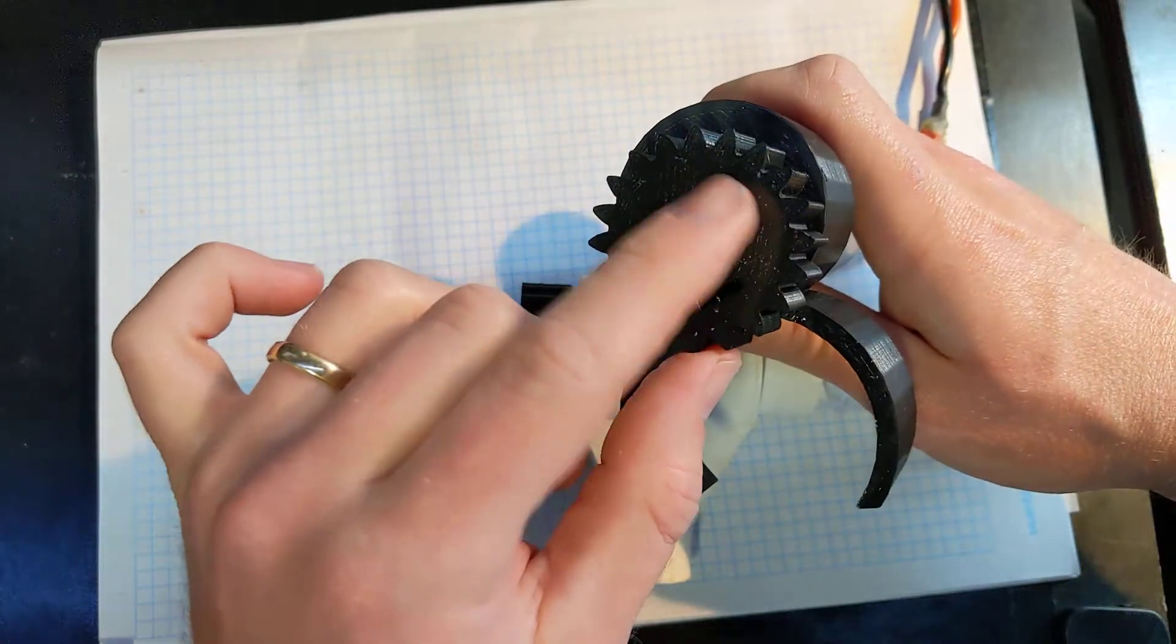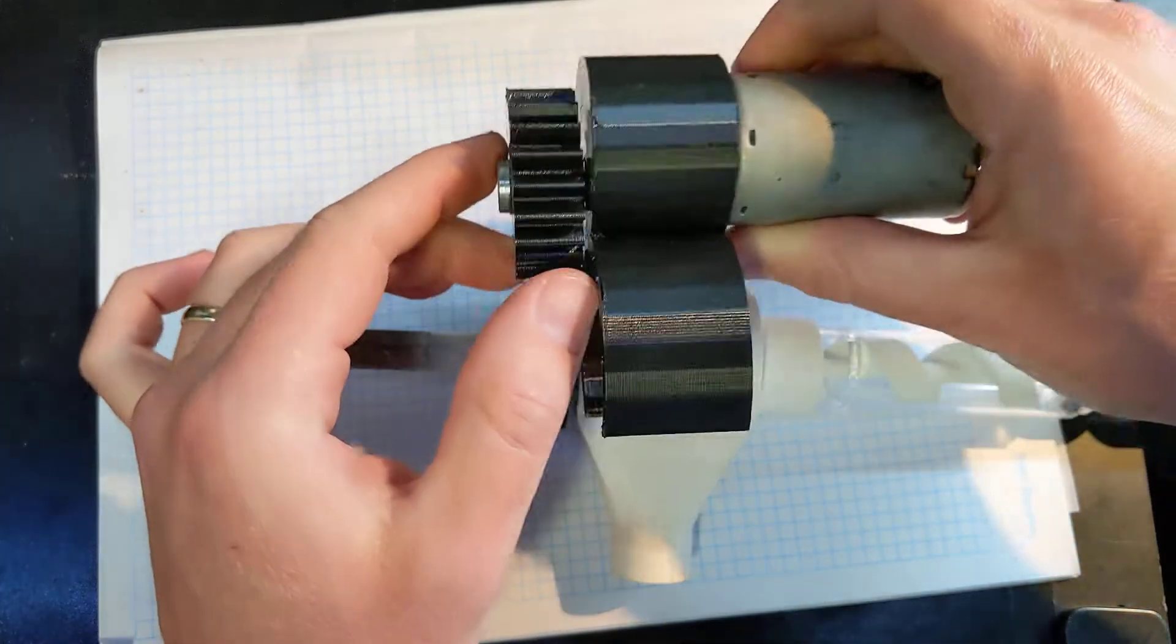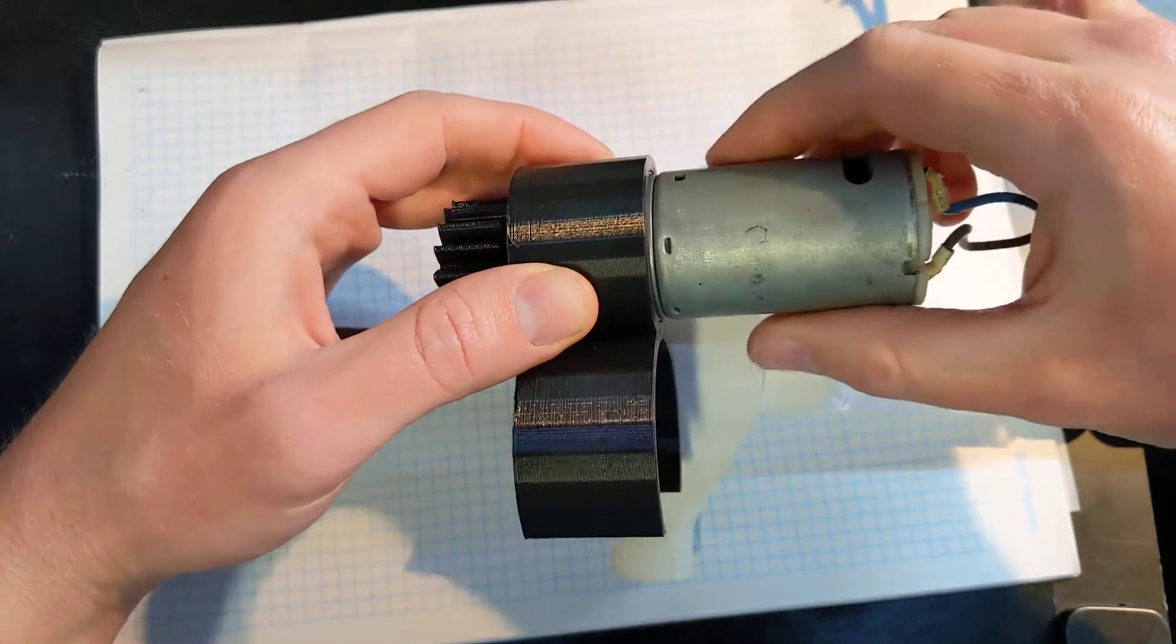This one has a steel bushing in the middle that I turned up on the lathe because there's only a 6mm shaft output from this gearbox. This is a 12 volt DC motor with a gearbox attached to the end.